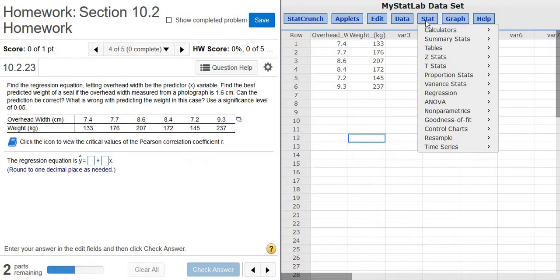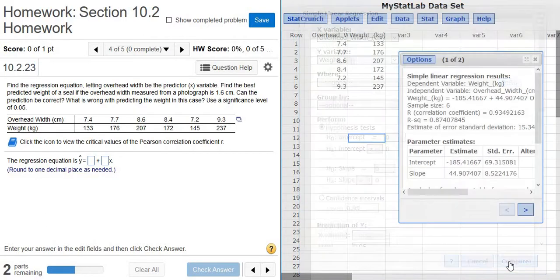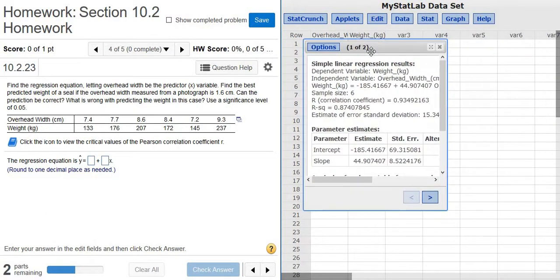Then you just go to Stat, Regression, Simple Linear. And you just always pick the first thing and pick the second thing. Then just click Compute and there's the answer.